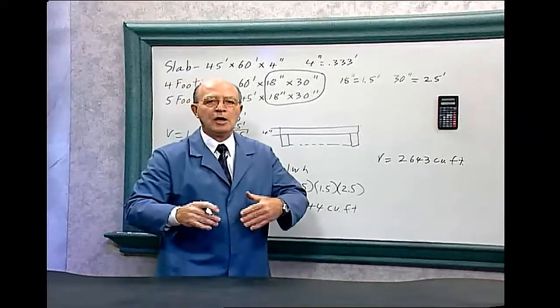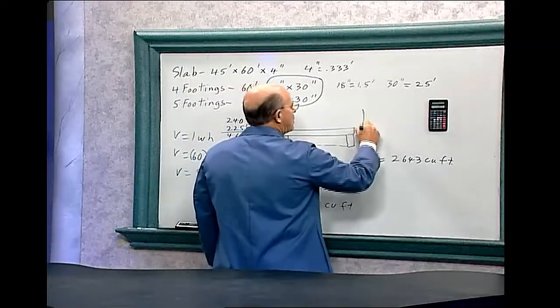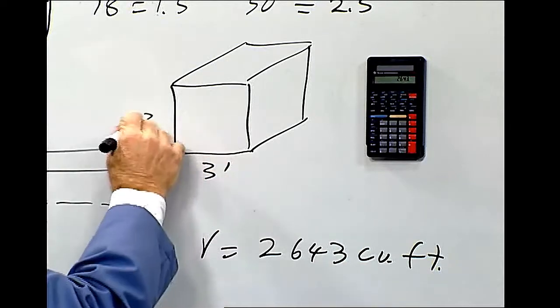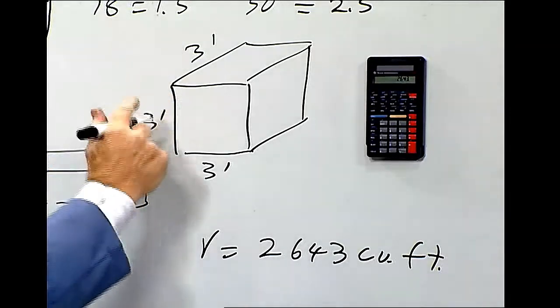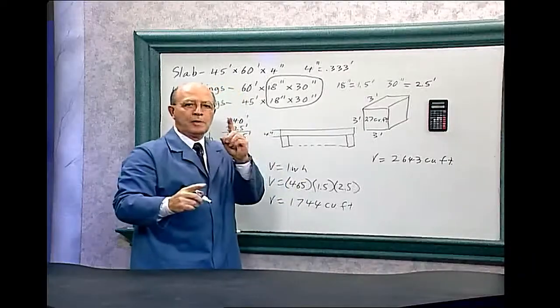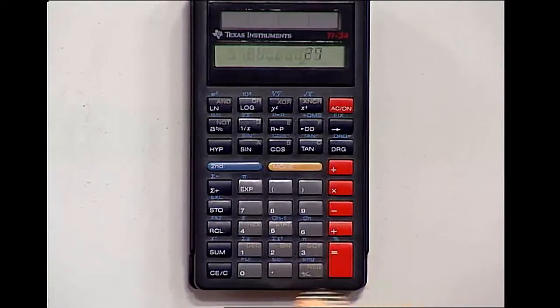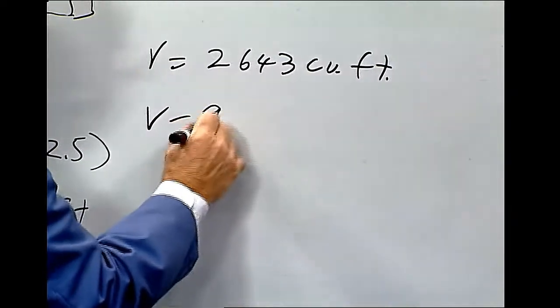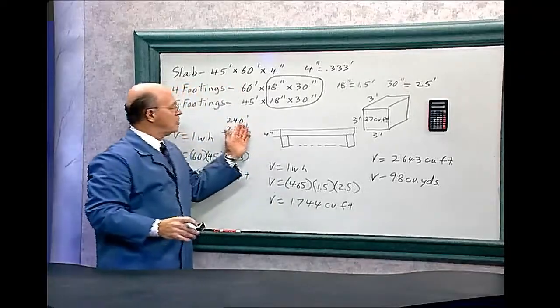But remember the question is how many cubic yards? They don't sell concrete in cubic feet, they sell it in cubic yards. And remember again, a cubic yard is 3 feet by 3 feet by 3 feet. So 3 times 3 is 9, 9 times 3 is 27 cubic feet makes 1 cubic yard. So we have to divide this number by 27. And that will give you 97.88. So volume equals 98 cubic yards of concrete needed to pour this slab.